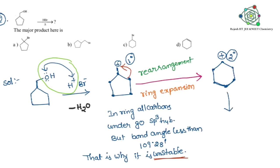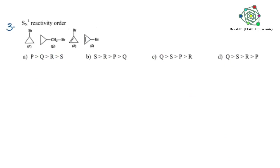Already one Br⁻ is waiting to attack on the ring. The positive and negative attach with each other, and the answer is the third option. Any doubts you can comment in the comment section — I will give you a clear reply.